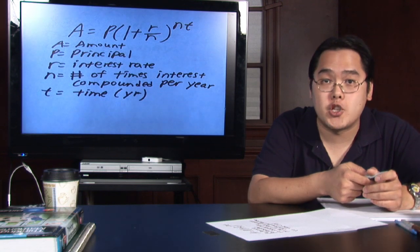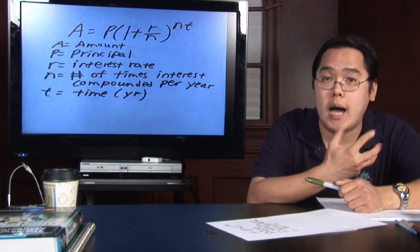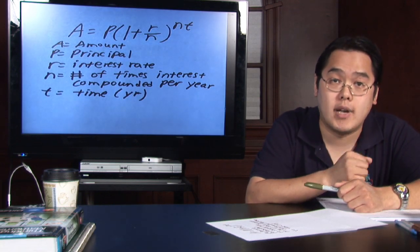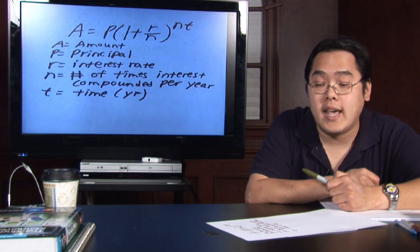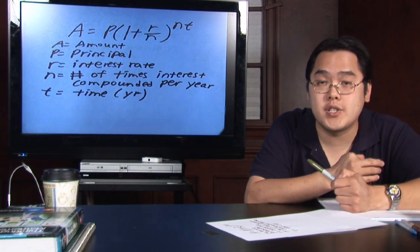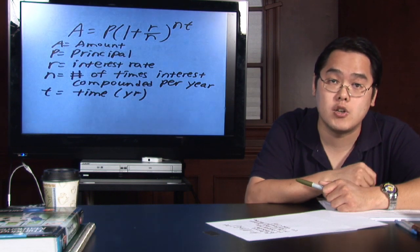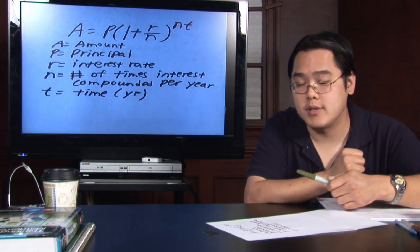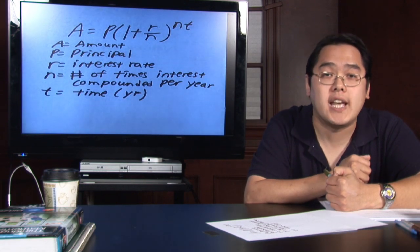A is the amount, how much you want to have at the very end. P stands for principal, how much you'll have at the beginning, how much you're depositing. R is the interest rate. N is the number of times interest is compounded per year. Different accounts will have different terms, so N is going to be very important. And T is the time. Time is generally mentioned in years.